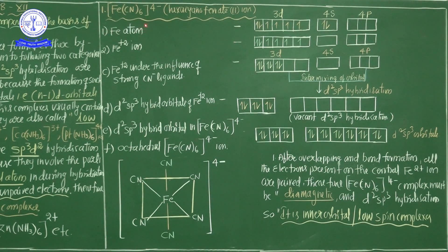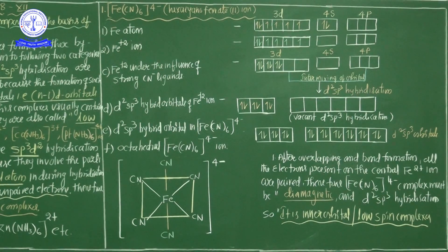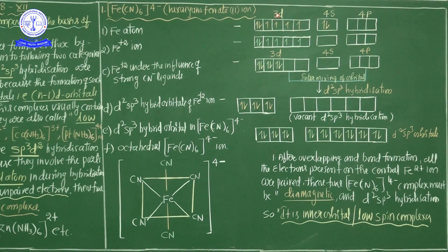The last orbitals of iron are 3d⁶, 4s², and 4p. The electronic configuration of Fe is 1s², 2s², 2p⁶, 3s², 3p⁶, 3d⁶, 4s². In this complex, the oxidation state of iron is +2, meaning 6 CN⁻ ligands approach the central metal atom, giving a coordination number of 6.